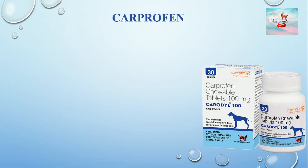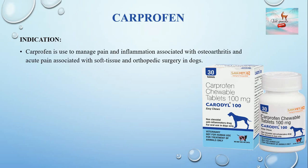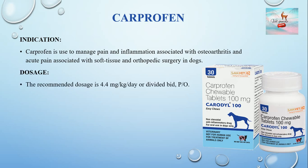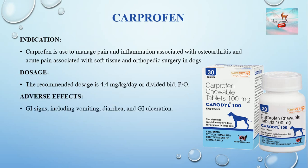Carprofen is used when animals indicate pain and inflammation associated with osteoarthritis and acute pain associated with soft tissue and orthopedic surgery in dogs. The recommended dosage is 4.4 mg/kg per day orally, or divided twice daily. Adverse effects include gastrointestinal signs such as vomiting, diarrhea, and gastrointestinal ulceration.